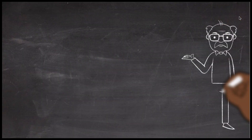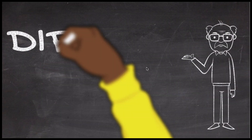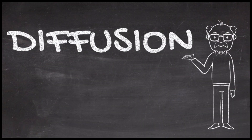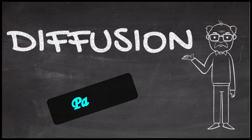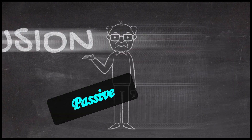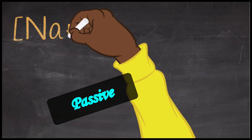Let's talk about diffusion. Diffusion is the movement of ions or molecules from an area of high concentration to an area of low concentration. It can also be described as things moving down their chemical gradients or their concentration gradients. One thing I do want to highlight at the outset here is that diffusion is always a passive process — it does not require energy.